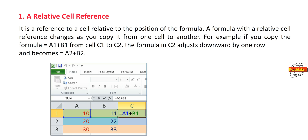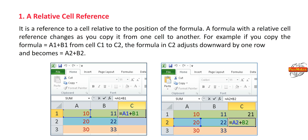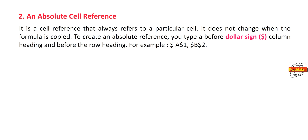A formula with a relative cell reference changes as you copy it from one cell to another. For example, if you copy the formula =A1+B1 from cell C1 to C2, the formula in C2 adjusts downward by one row and becomes =A2+B2. An absolute cell reference is a cell reference that always refers to a particular cell and does not change when the formula is copied.